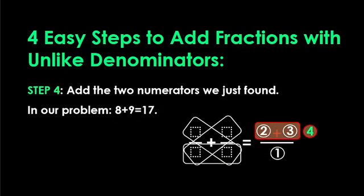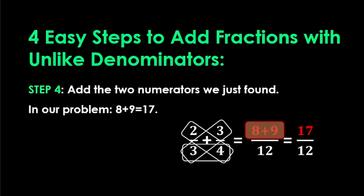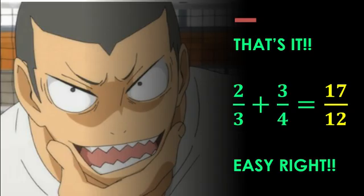Step 4, add the two numerators we just found. In our problem, 8 plus 9 equals 17. And that's it. 2 over 3 plus 3 over 4 equals 17 over 12. Easy, right?